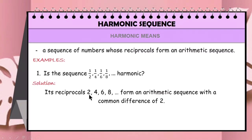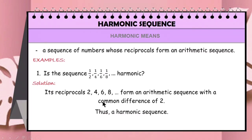4 minus 2 is 2, 6 minus 4 is 2, and 8 minus 6 is also 2. Since the reciprocals of these numbers form an arithmetic sequence, therefore this sequence is harmonic.